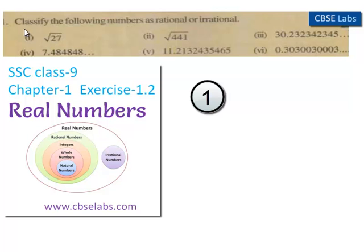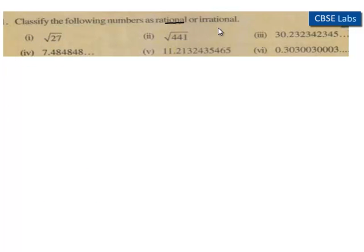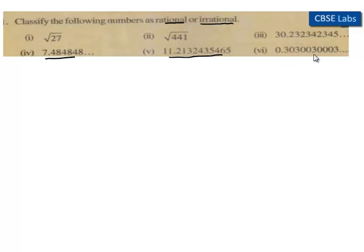Then move on to the next problem. Here we need to find whether the number is rational or irrational. The 4th one is 7.484848, the 5th one is 11.2132435465, and the 6th one is 0.30300300.